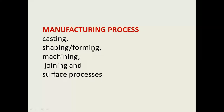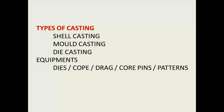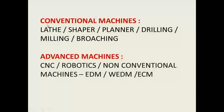The next topic is manufacturing processes involved in production. These include casting, shaping, forming, machining, joining, and surface processes. Types of castings available are shell casting, mold casting, and die casting. Equipment for casting includes dies, cope, drag, core pins, and patterns.